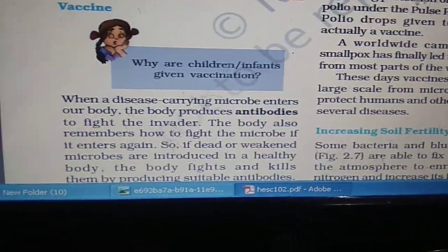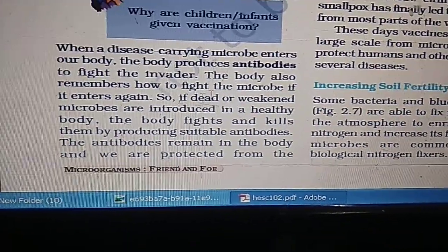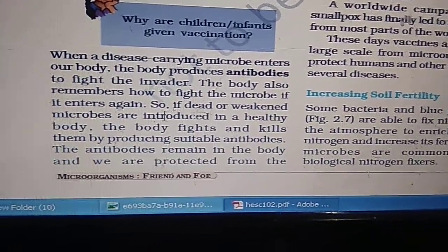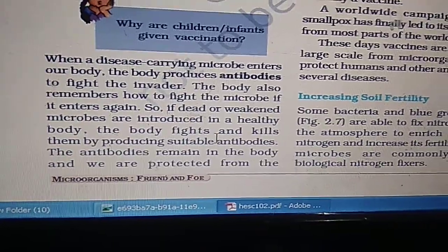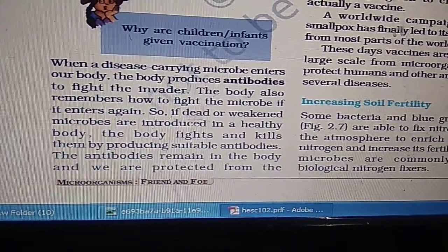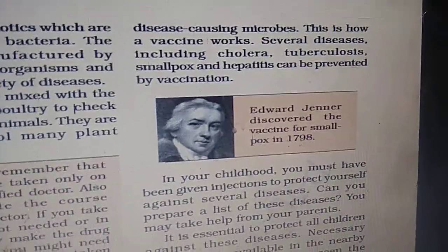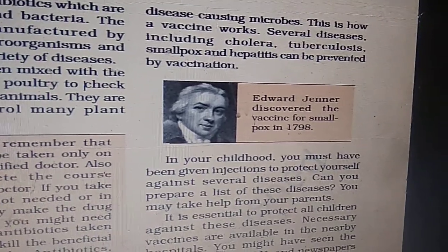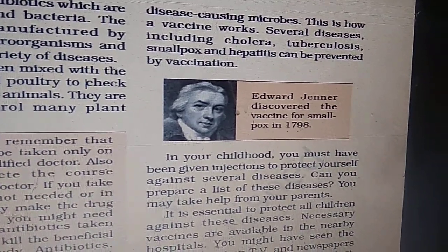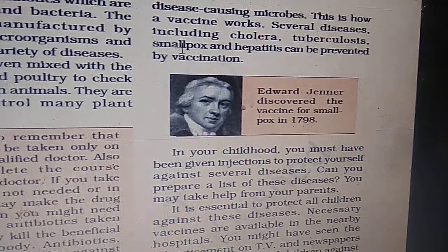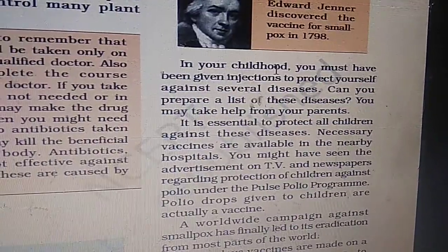What are vaccines? Vaccines are produced when dead and weakened microbes are introduced into a healthy body. The body fights and kills them by producing suitable antibodies. Edward Jenner discovered the vaccine for smallpox, and as a result smallpox has been eradicated. Diseases like cholera, tuberculosis, and hepatitis are also prevented through vaccines.